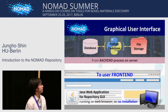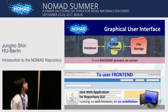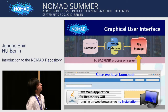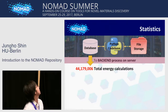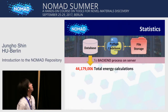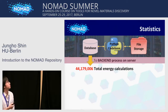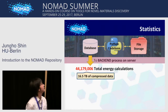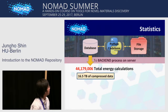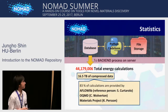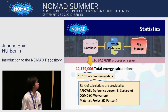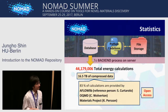Since we launched this repository service, people are uploading their data quite a lot, and the data volume of our NOMAD repository database is increasing significantly. Now we store more than 44 million total energy calculations in the repository, which is about 16.5 terabytes of compressed data. 83% of those calculations are provided by AFLOW, QMD, or the Materials Project, and these are open access.